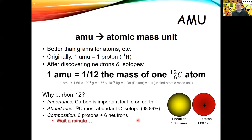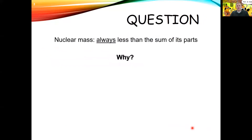So when we take one AMU, it should be about the average mass of a neutron and a proton. But a neutron and a proton each weigh slightly more than one AMU. So if you take six protons, six neutrons, and add up their mass, it doesn't add up to 12 — it adds up to slightly more than 12. This brings up the question of why the nuclear mass is less than the sum of all the things put into it.